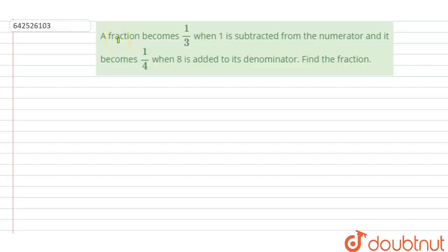Question says that a fraction becomes 1 by 3 when 1 is subtracted from the numerator, and it becomes 1 by 4 when 8 is added to the denominator. We have to find the fraction.